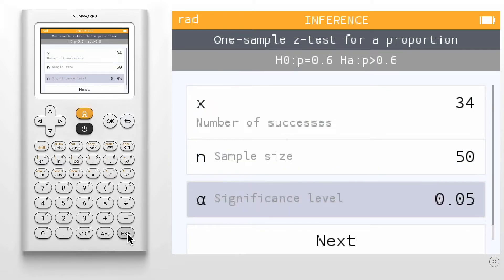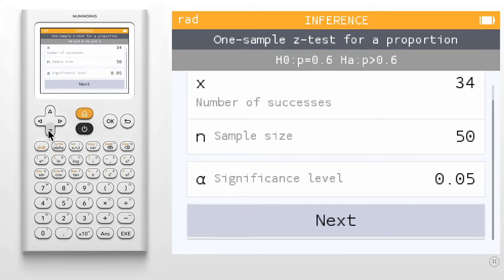We can also indicate our significance level. To change the significance level, click OK. Select Next.